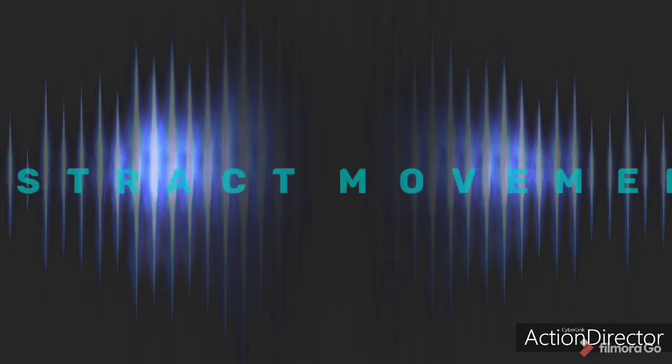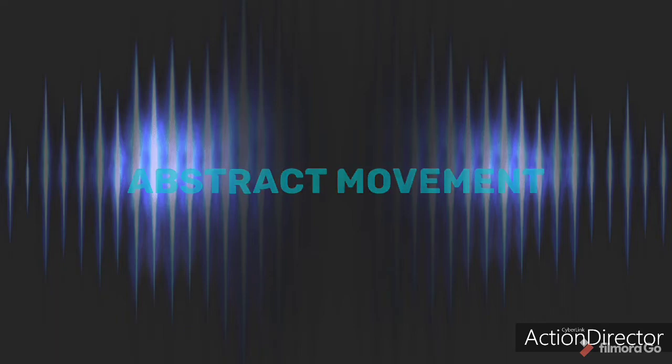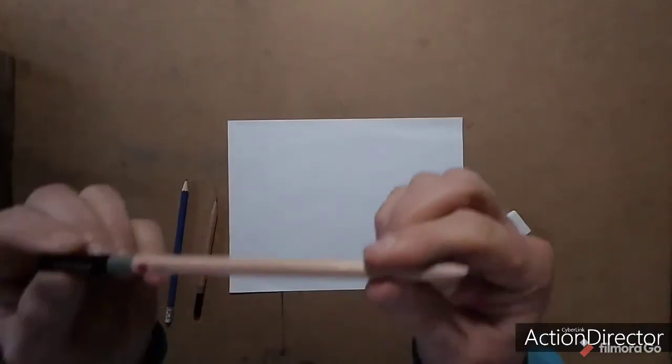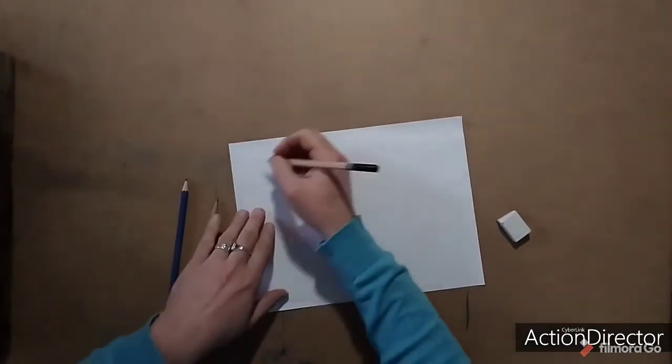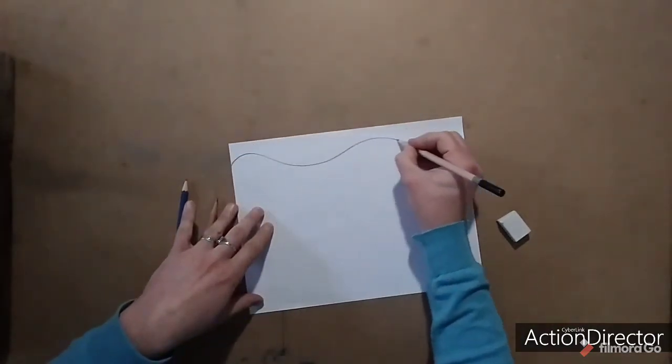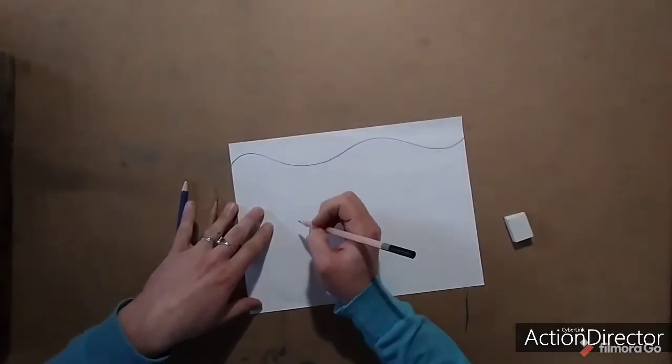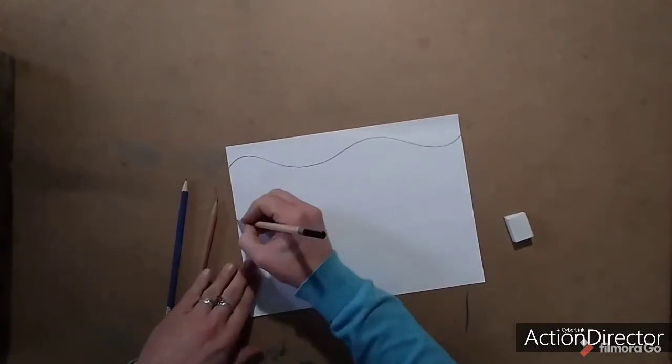Our project today is called Abstract Movement. Start with your 4B or 6B pencil, and draw five wavy lines across the page, from left to right. Make sure they do not touch each other.